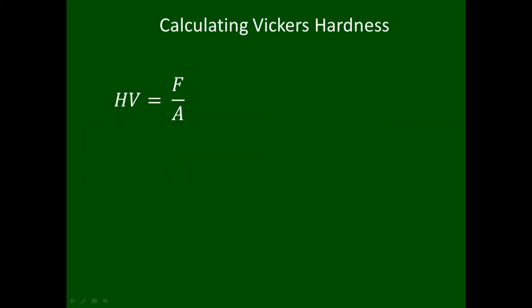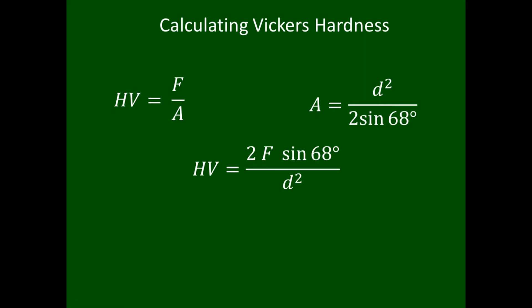Let's begin with the Vickers hardness. Very simply, we begin with the definition of hardness — force per unit area — and insert the contact area we calculated earlier. We can make a few simplifications to find that HV is roughly equal to 1.8544 times the peak force over d squared.